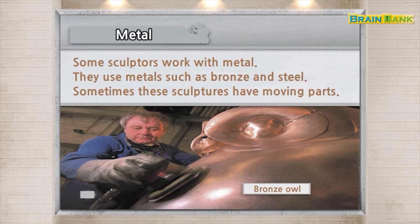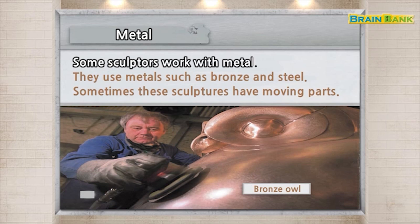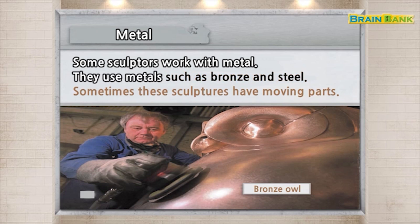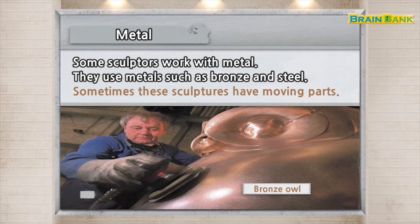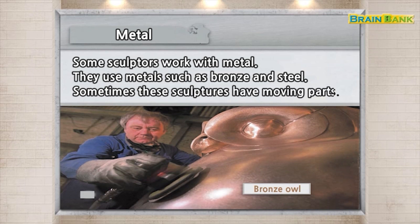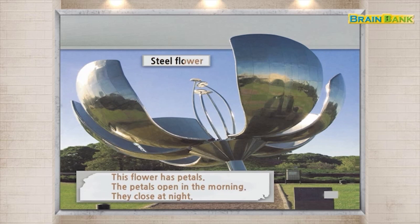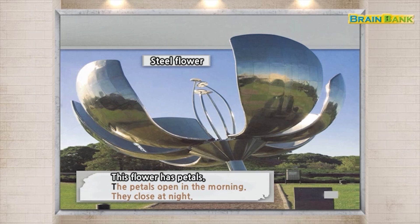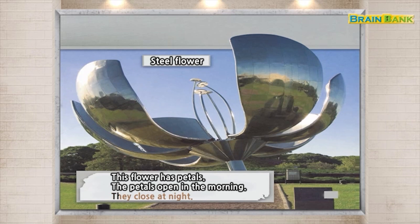Metal. Some sculptors work with metal. They use metals such as bronze and steel. Sometimes these sculptures have moving parts. Bronze owl. Steel flower. This flower has petals. The petals open in the morning. They close at night.